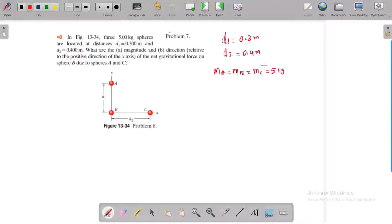We need to find the magnitude and direction of net gravitational force on sphere B due to sphere A and C. What is the force acting on sphere B by sphere A? This is in the opposite direction, positive i-hat direction. Sphere C is in the opposite direction.